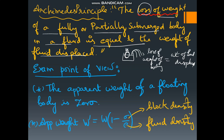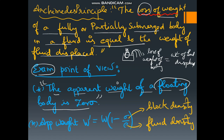Now let us see from the competitive exam point of view — what are all the points you must remember? The apparent weight of a floating body is zero. This is a very important point and it is given in NCERT in the blue color box. Remember that for a fully floating body the apparent weight is zero.